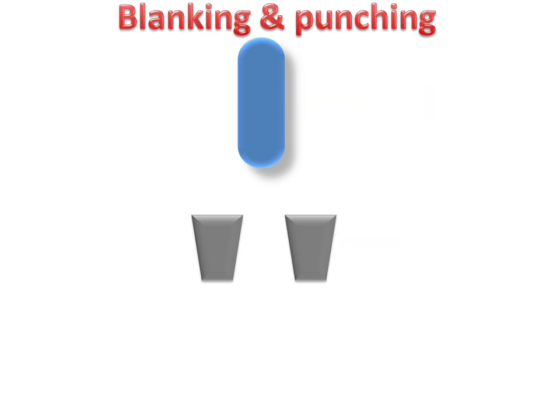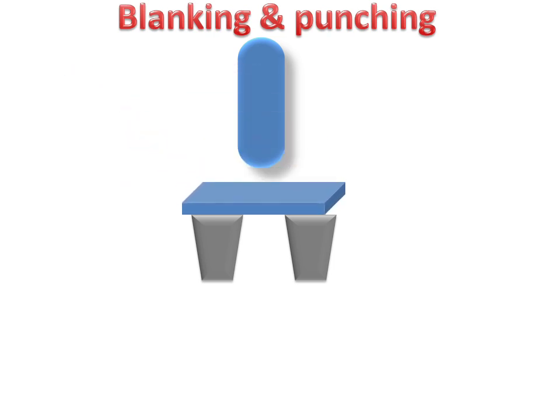In between the die and tool we will insert a plate, on which we will perform our blanking and punching. Let's see the animation of blanking and punching.